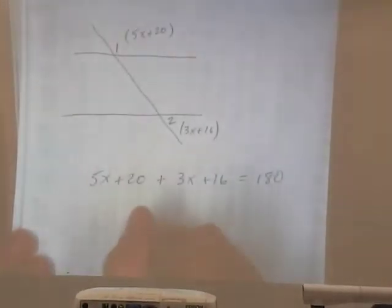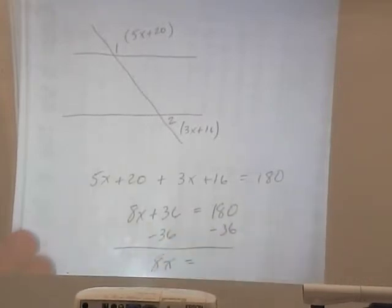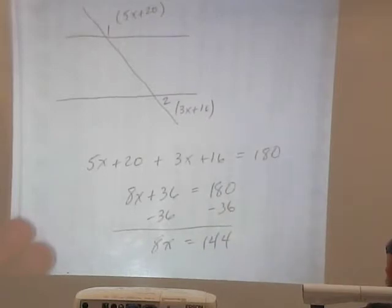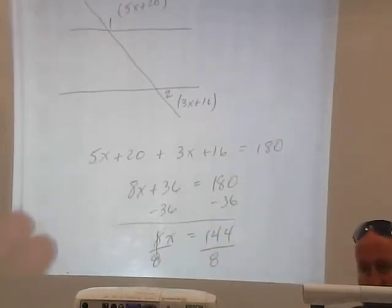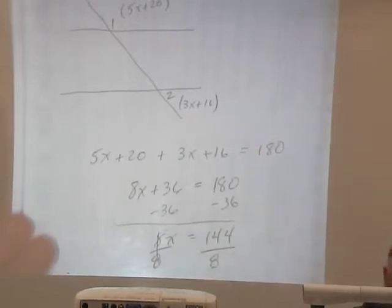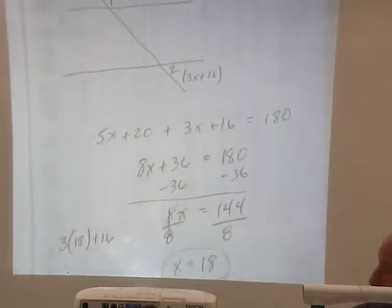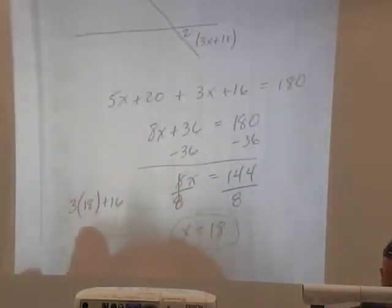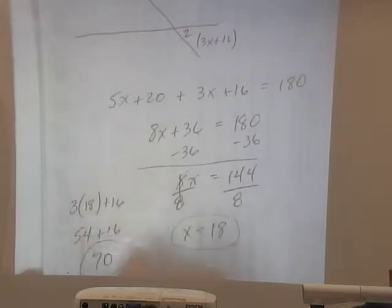Equals 180. So I can combine some like terms on the left. We've got 8X plus 36 equals 180. Subtract 36 from both sides. 8X is equal to 144. Divide by 8. X is equal to 18. And that's not what they want though. Be careful. Notice they put 18 in one of the answers. Be careful. They want the measure of angle 2. And the measure of angle 2 was 3 times 18 plus 16. So 3 times 18 is 54. Plus 16 gives us 70. So it's D.